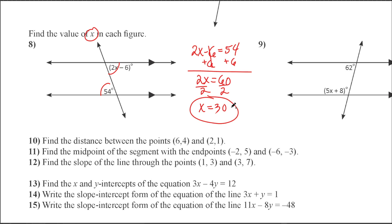You can plug it back in to check: 2 times 30 is 60, minus 6 is 54 — just like it should be. That's easy, wouldn't you agree? You just got to know the relationship between the angles. If you don't know that, you're just guessing on how to set it up.